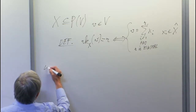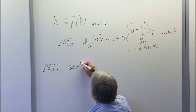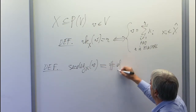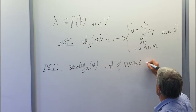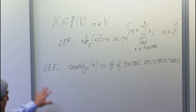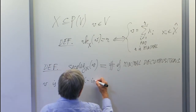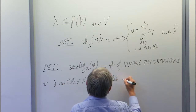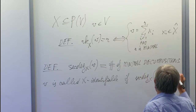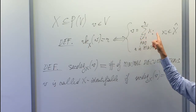The second definition is the secant degree of V with respect to X, which is just the number of minimal decompositions. When the secant degree is 1, this means there is a unique decomposition, so from V you can recover the Xi uniquely.